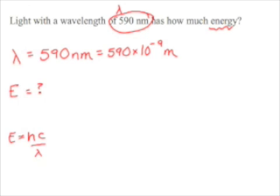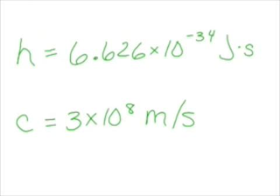What other information do we need to know? Well, we need to know that h equals, and that's a constant, so we can look that up. You're going to have that on the test. h is equal to 6.626 times 10 to the negative 34th joules times seconds.